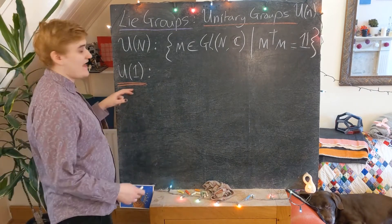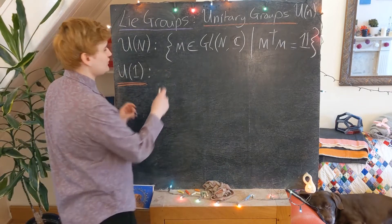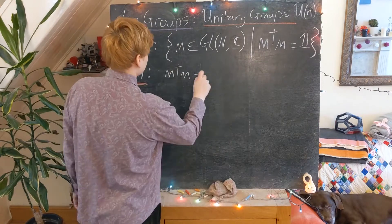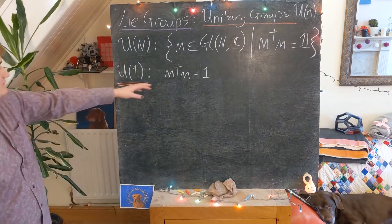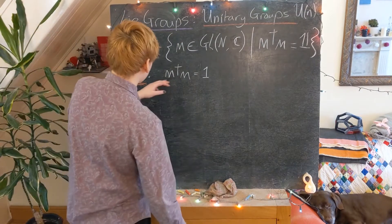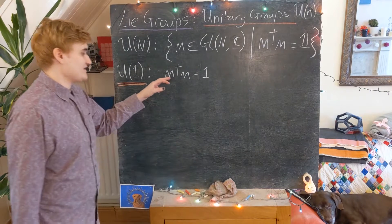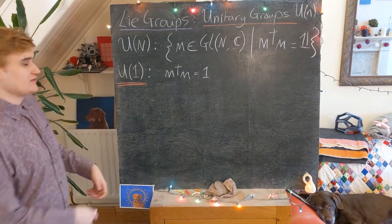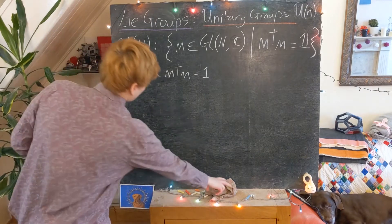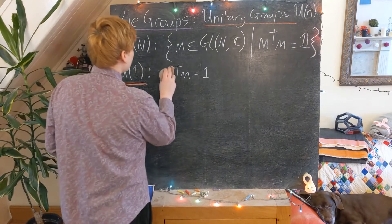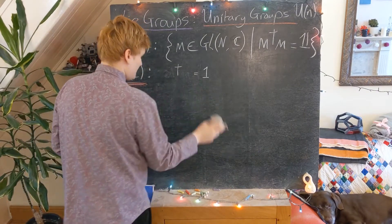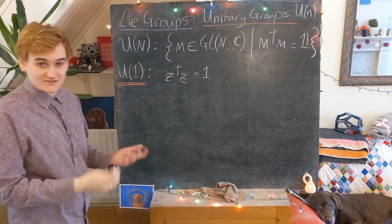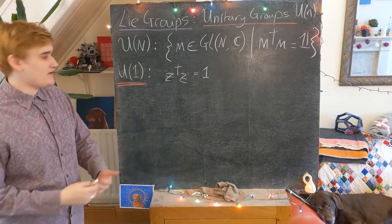Any element in this one-dimensional unitary group is going to have to satisfy the unitary condition. Now M is basically just a one-by-one matrix — simply a complex number — so rather than calling it M, to avoid confusion, I'm just going to call it Z, since it is just a single complex number.